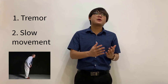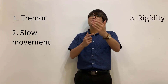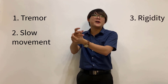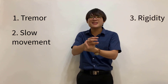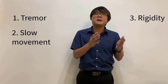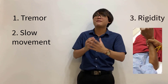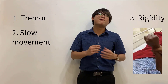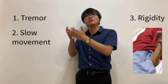Thirdly, we have what we call rigidity. We ask the patients to stay relaxed and we move their joints. In a normal person it is quite easy to move — not hard or stiff. But in patients with Parkinson's disease, it is very difficult to move the joint even though they are relaxing their arms, because they have rigidity.